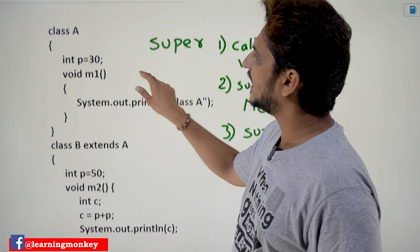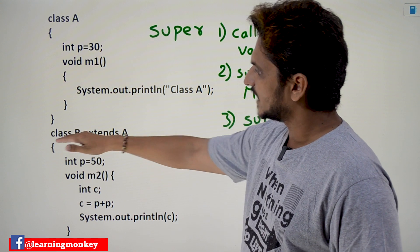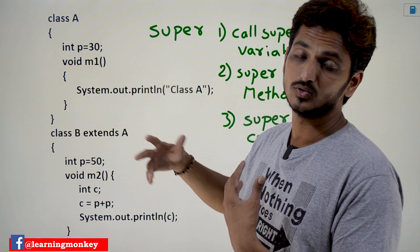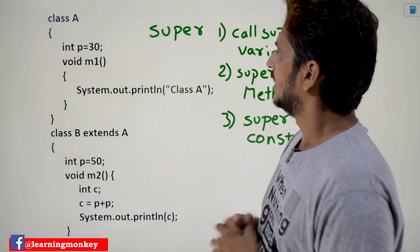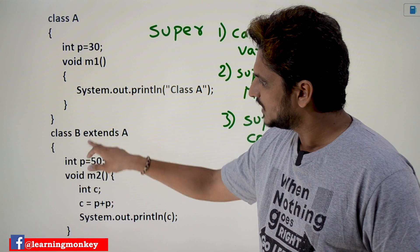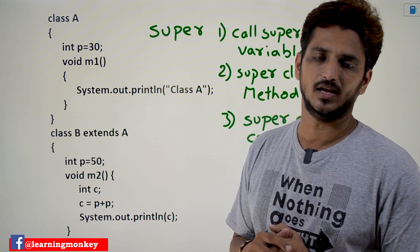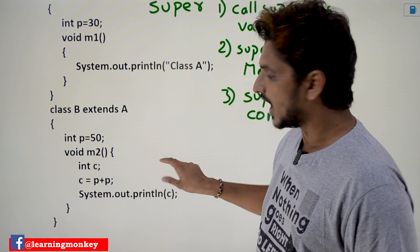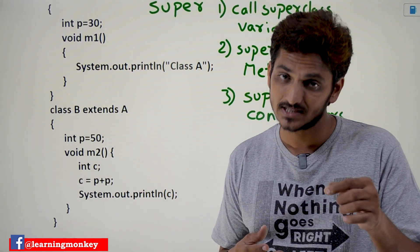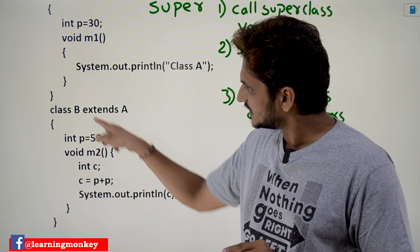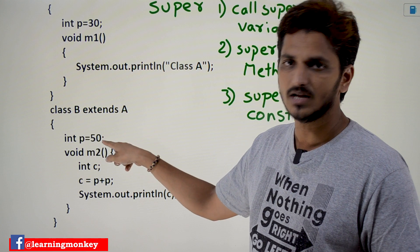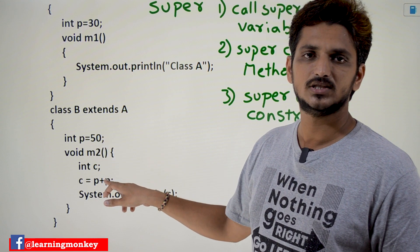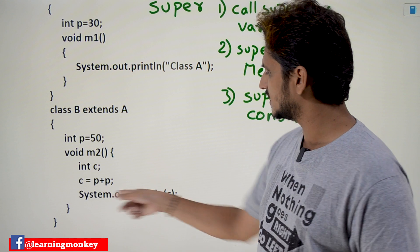Let's take class A. In this class we are having an instance variable int p = 30, and class B extends A. Class A is the super class and class B is the sub class. Whenever we use this inheritance concept, we are going to use the super keyword. Now in class B we are having a variable int p = 50. In method M2 we have c = p + p. It is going to check the value of p in the present class. In class B, p is available and equals 50, so 50 + 50 = 100 is assigned to c. Our output is 100.